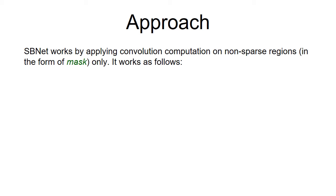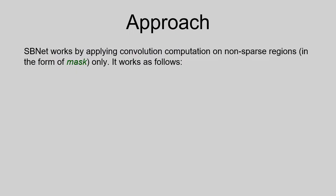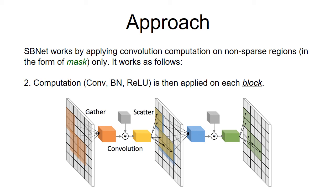SBNet works by applying convolutional computation on non-sparse regions in the form of a mask only. A pixel-wise mask is first transformed into a block-wise mask using our tiling algorithm. As shown in the figure, blocks are stacked in the batch dimension, and then computation — such as Convolution, BatchNorm, or ReLU — is applied.